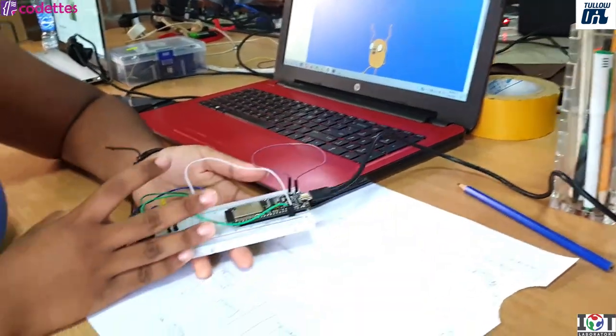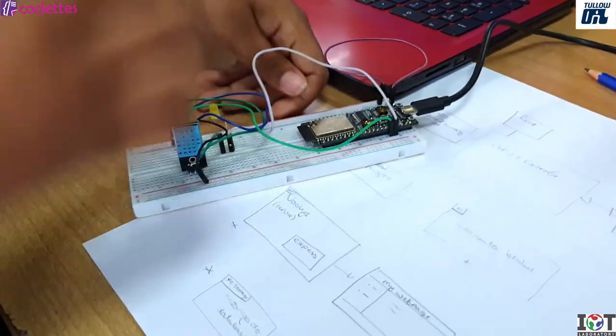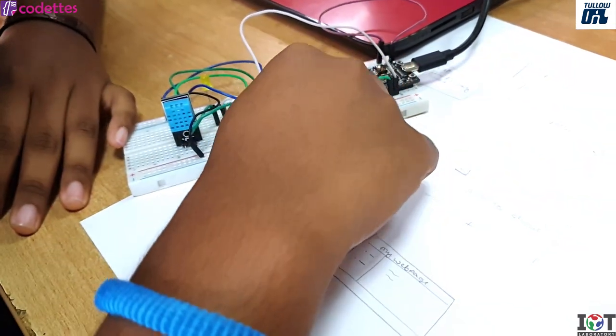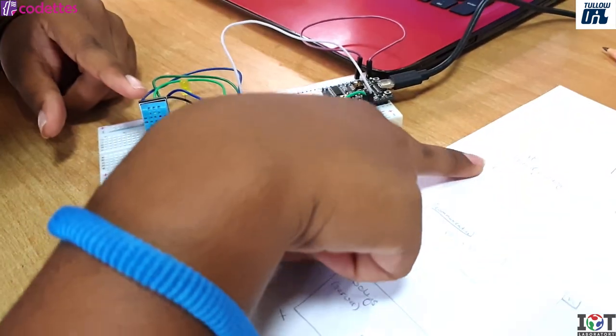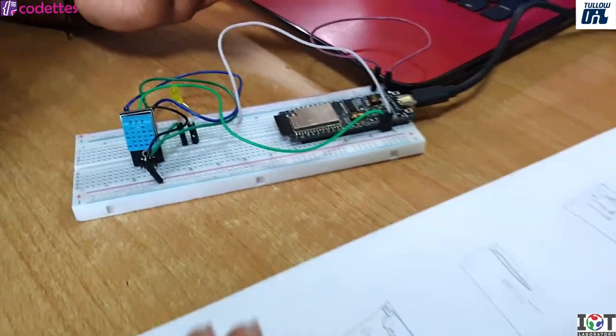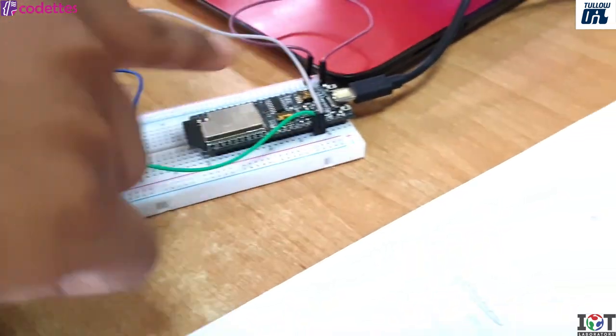So first, I learned how to work with the ESP32. And what this does is basically I have a sensor, which is a DHT11. It sends the temperature and humidity, and so that will be sent here.